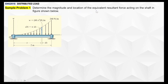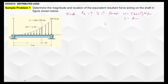Let's try sample problems. First: determine the magnitude and location of the equivalent resultant force acting on the shaft shown. We're given the loading equation w(x) = 60x² N/m, the maximum load is 240 N/m, and the minimum is zero. Here dA = w dx, and the location integral is x times w(x) dx. The total length is 2 meters.